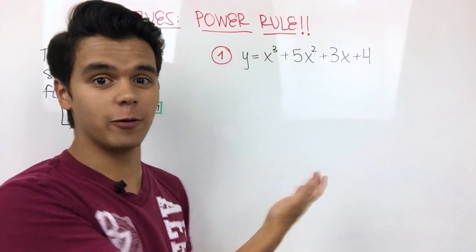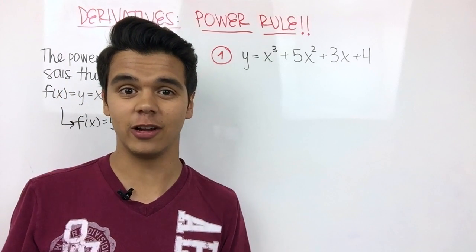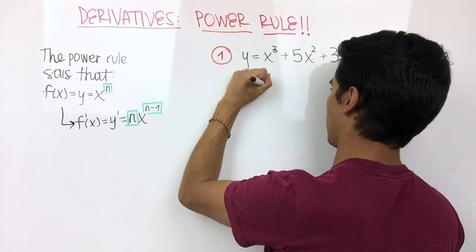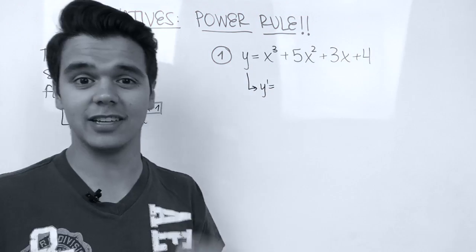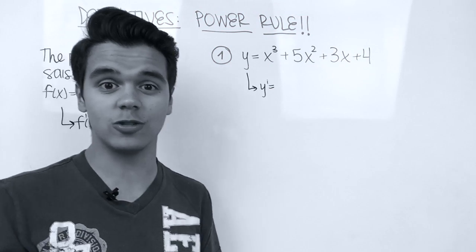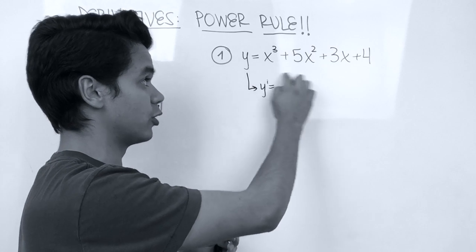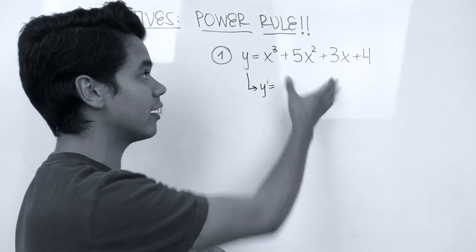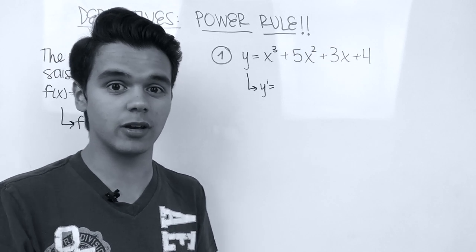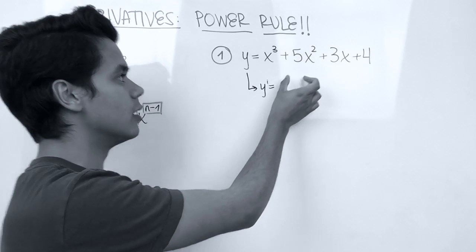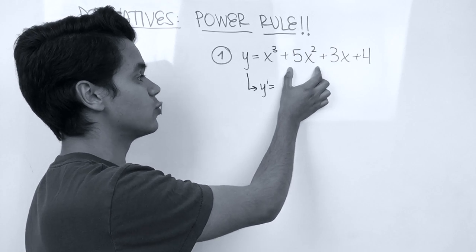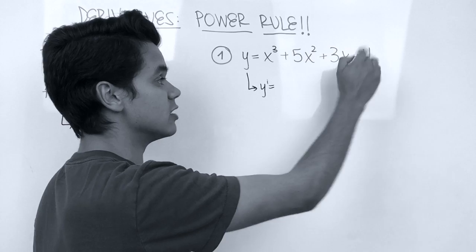For the first example we have the following function, so let's start calculating its derivative. The derivative of y, which is called y prime, is equal to—since this big function is equal to the sum of different small terms or small functions if you want to call them like that, we can say that we're going to distribute our derivative in each term. So we can calculate the derivative of this one, plus the derivative of this one, plus the derivative of this one, and so on.